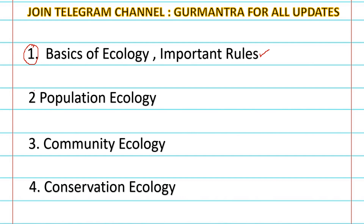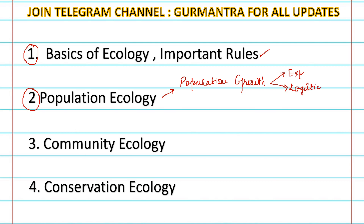The second most filtered topic is Population Ecology. This is a very important part of the domain. Questions in population ecology involve definitions, formulas, and numericals. Because there are numericals here that range from easy to challenging, if you practice the mathematics, you will be a pro.